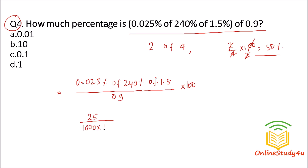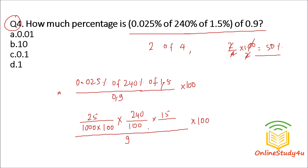After the decimal there are 3 digits, so I write 25 over 1000. The percentage signs bring 100 into the numerator and denominator respectively. After simplification, the decimals cancel: we get 25 times 240 times 15 divided by 1000 times 100 times 9 times 100. After cancellations — 100s cancel, factors simplify — we get 10 divided by 100, which is 0.1. So option C: 0.1% is the correct answer.